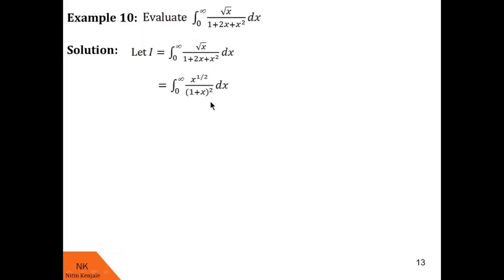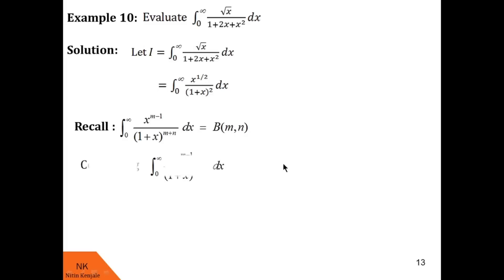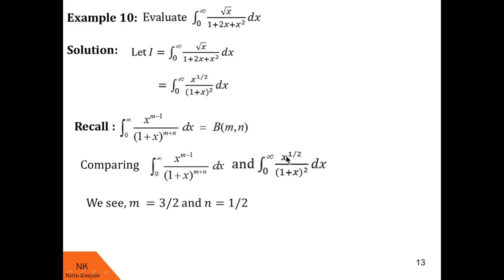Here we evaluate the integral of √x / (1 + 2x + x²) dx from 0 to infinity. Labeling it I, we simplify the integrand as x^(1/2) / (1 + x)² dx. Recalling the third form of the beta function — beta(m,n) = ∫₀^∞ x^(m−1) / (1+x)^(m+n) dx — we compare: m − 1 = 1/2 so m = 3/2, and m + n = 2 so n = 1/2. The value of the integral is beta(3/2, 1/2).